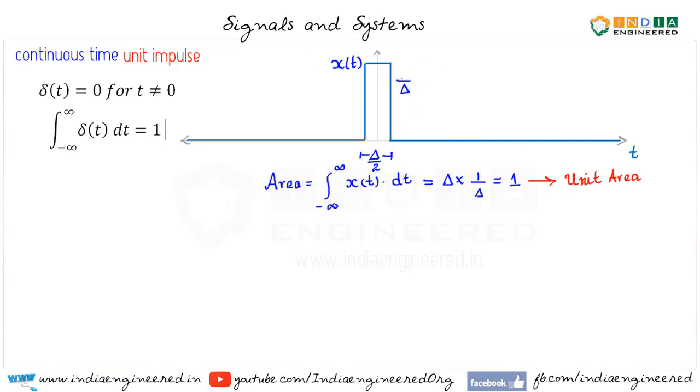That means the height has to be increased in order to maintain unit area. That means its height has to be increased so that it should be 2/Δ. Now still we have got the unit area. Let's check it quickly. That is Δ/2 into 2/Δ. We will get 1 here. Again we have unit area.